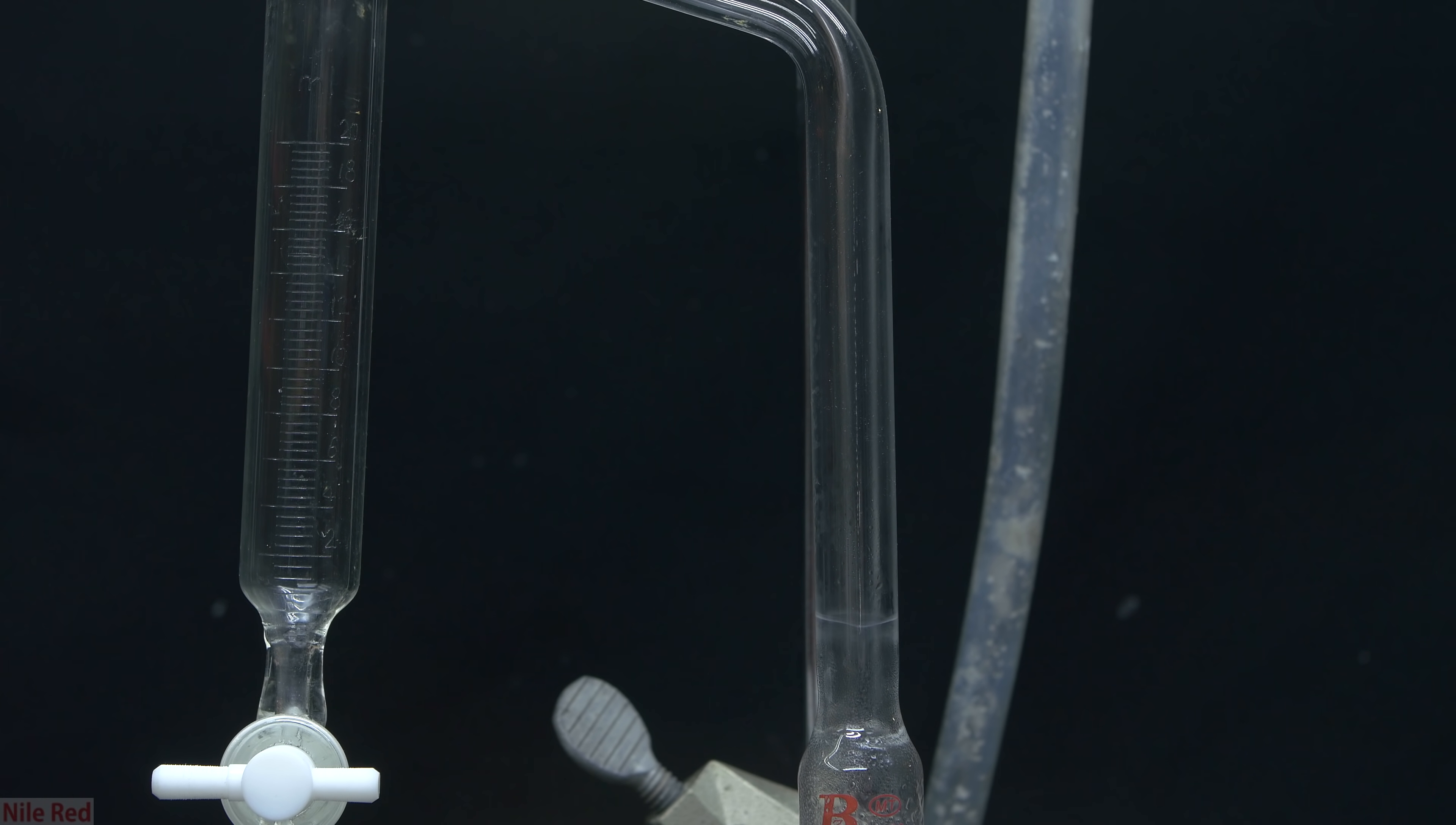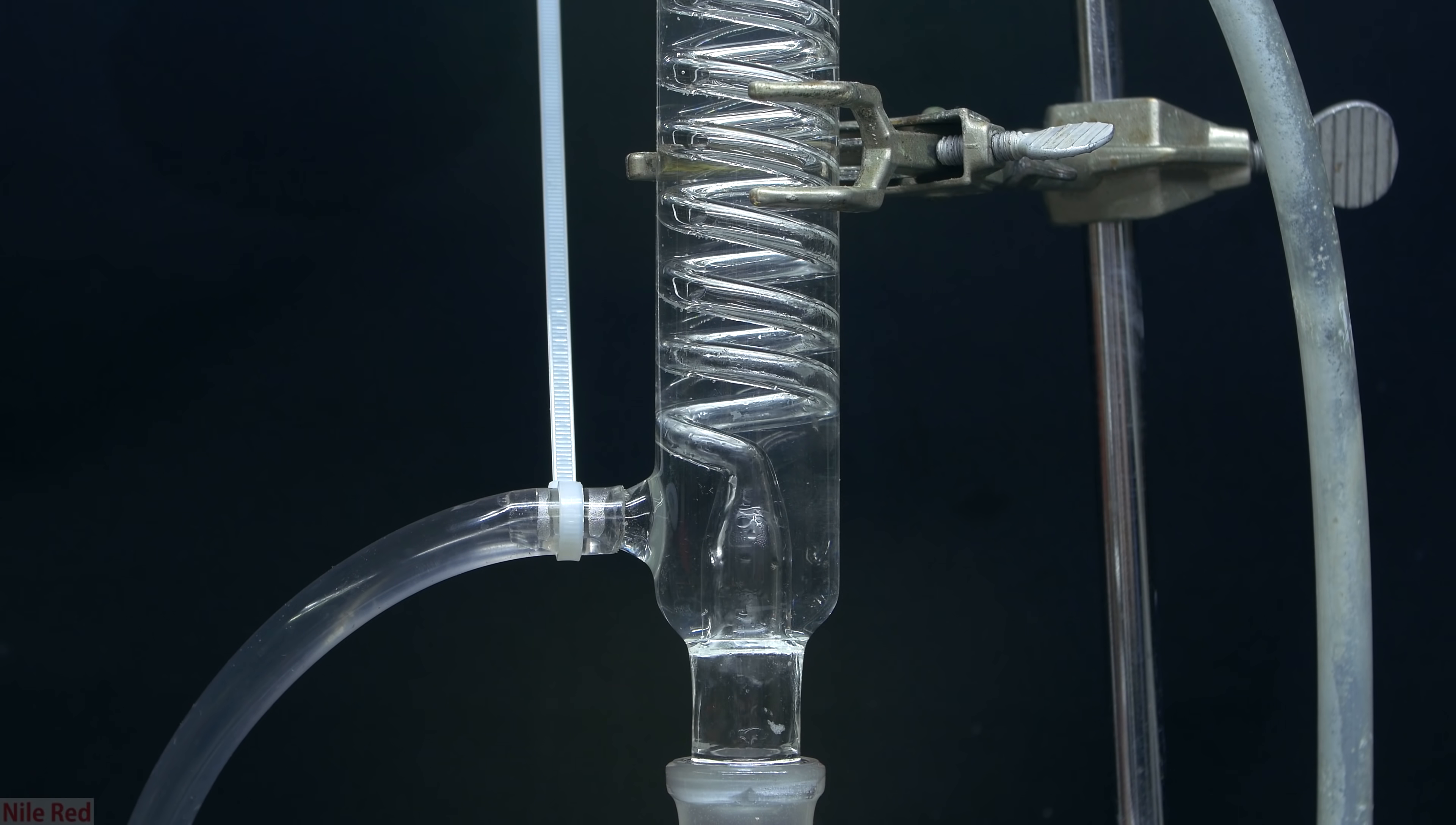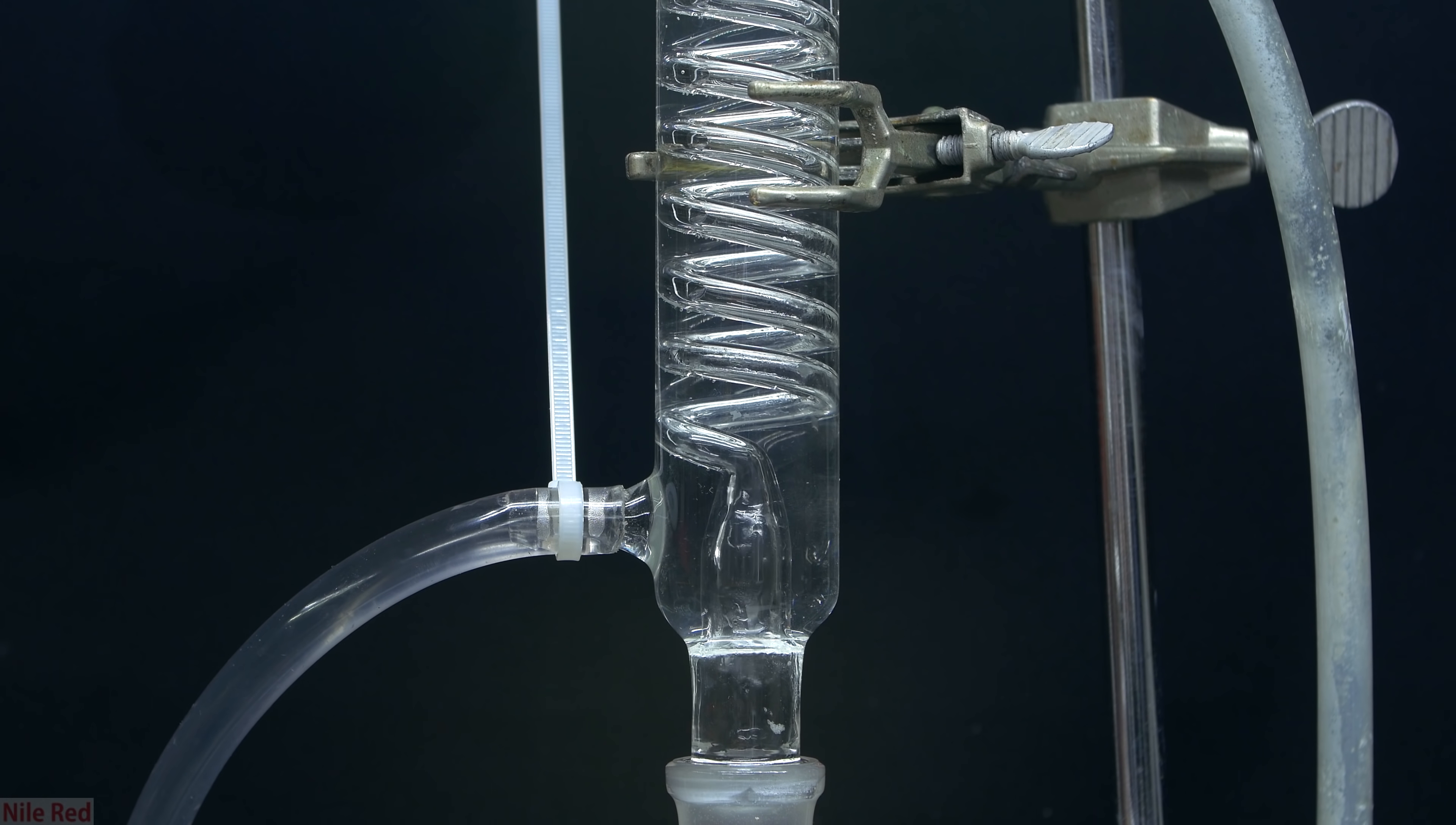As things start to heat up more, we can see our vapor front moving up through the Dean-Stark apparatus. What's happening here is the hot vapors from the flask are traveling up to the Dean-Stark apparatus and condensing on the cold walls. The vapors slowly heat up the walls of the apparatus though, so they slowly travel up. Eventually the vapors will make it all the way up to the cold water condenser, where they'll recondense and fall back down to the area on the left.